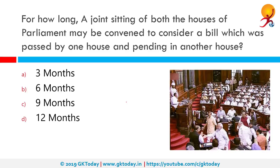For how long may a joint sitting of both houses of parliament be convened to consider a bill passed by one house and pending in another? The correct answer is 6 months. A bill which requires special majority in both houses cannot be introduced in a joint session. Only bills requiring simple majority — whether in Lok Sabha or Rajya Sabha — can be passed in a joint session. If 6 months has elapsed from the date of reception of the bill by either house without being passed, it is considered a deadlock. On a constitution amendment bill, there cannot be any joint sitting.